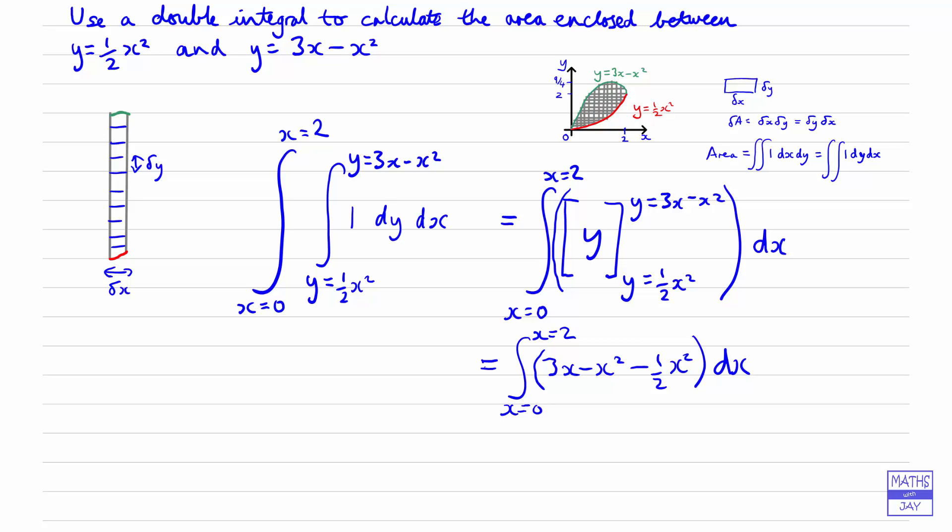It can be simplified before we integrate because we've got two terms in x squared. That's going to be 3x stays the same, but we've got minus x squared minus half x squared, so that's minus 3 over 2 x squared dx. Let's shrink that down a bit so we can give ourselves some more space to continue.